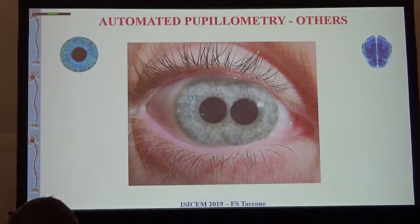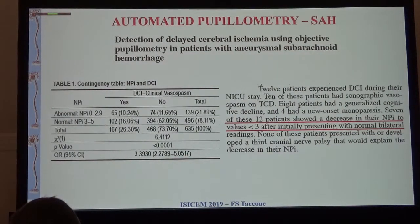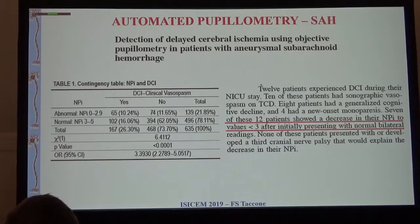There may be other indications beyond ICP - the next talk will cover prognostication after cardiac arrest. There are some small case series in SAH patients where the alteration of this index - the alteration in the quality of pupillary reflex - precedes clinical deterioration by several hours.